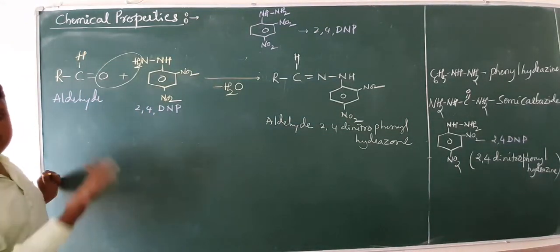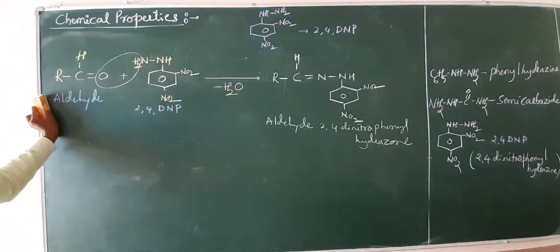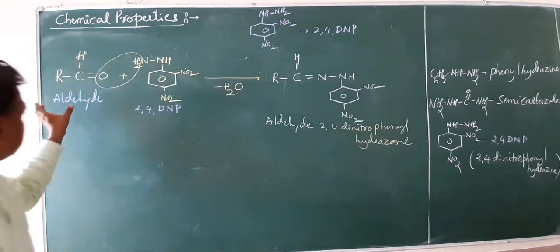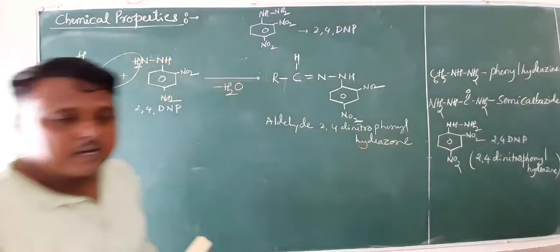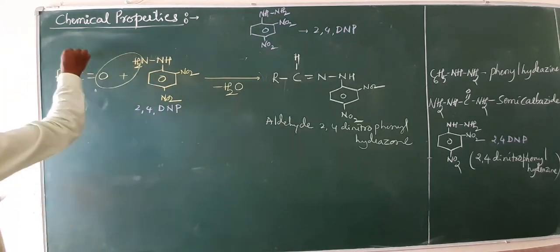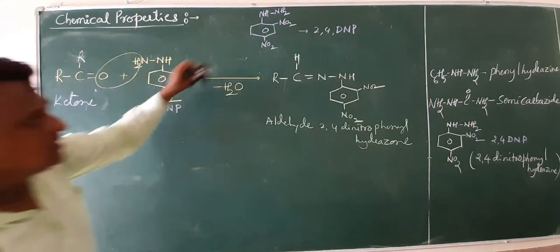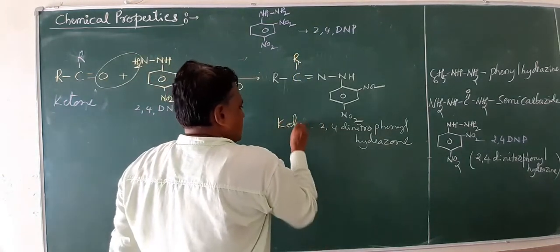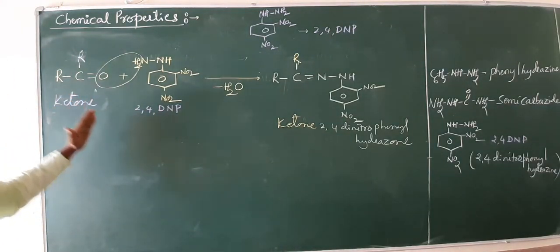Similarly, you can practice with ketones. Ketone reacts with 2,4-DNP (2,4-dinitrophenylhydrazine). The product is the ketone 2,4-dinitrophenylhydrazone — you just change the R group. This is also a condensation reaction of the aldehydes and ketones chapter.